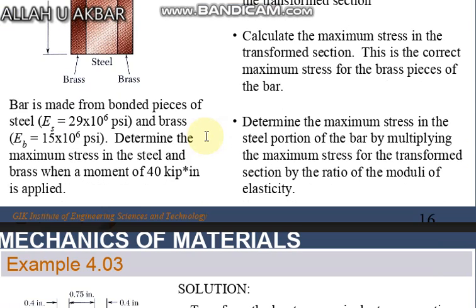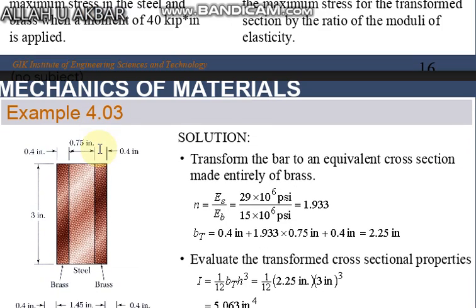We will use values of E which is given. For steel it is 29×10^6 psi, while for brass it is 15×10^6 psi. So we will find n, so E_steel by E_brass is equal to 1.933. So we will convert this material 0.4 inch brass.